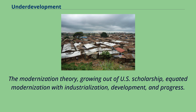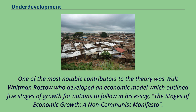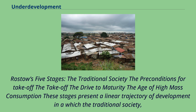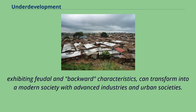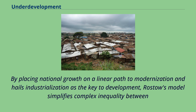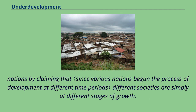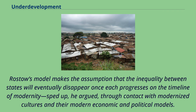Modernization theory, growing out of U.S. scholarship, equated modernization with industrialization, development, and progress. One of the most notable contributors was Walt Whitman Rostow, who developed an economic model outlining five stages of growth for nations to follow. In his essay 'The Stages of Economic Growth: A Non-Communist Manifesto,' Rostow's five stages are: the traditional society, the preconditions for takeoff, the takeoff, the drive to maturity, and the age of high mass consumption. These stages present a linear trajectory of development in which the traditional society — exhibiting feudal and backward characteristics — can transform into a modern society with advanced industries and urban societies. By placing national growth on a linear path and hailing industrialization as the key to development, Rostow's model simplifies complex inequality between nations by claiming that different societies are simply at different stages of growth. His model assumes that inequality between states will eventually disappear once each progresses on the timeline of modernity.